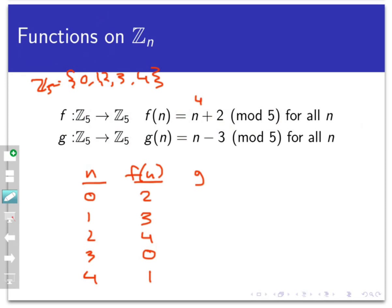Now, let's take a look at g, which is similar to f, except instead of adding 2, I'm subtracting 3, and then reducing to the least non-negative residue mod 5. If I put in 0, I'd have 0 minus 3, and negative 3 mod 5 is plus 2. If I put in 1 for n, I'd have 1 minus 3, which is negative 2. Negative 2 mod 5 is 3. When I put in 2 here, I'd have negative 1, and negative 1 mod 5 is 4. When I put in 3, I have 3 minus 3, which is 0. And then 4 minus 3 is 1.